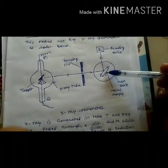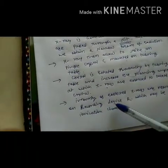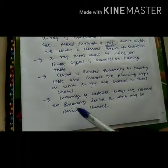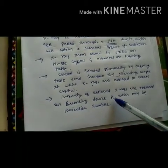The intensity of the reflected x-rays are measured on a recording device which may be an ionization chamber or photographic plate.